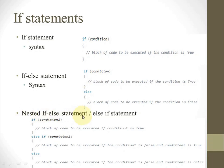Next, we have the nested if-else statement, sometimes called the else-if statement. We will have more than one condition, but only one block will be executed and the rest will be skipped. The syntax is: if the first condition is true, the first block executes. If false, control goes to else-if — the second condition is checked. If that is true, the second block executes and the rest are skipped. If all conditions above are false, the last else statement is executed.